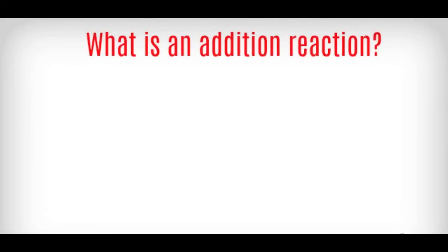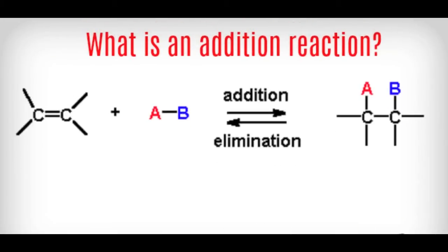What is an addition reaction? Addition reactions are where you're adding something to the molecule to remove the pi bond. The opposite of that is elimination reactions, where you remove something from the molecule to reform the pi bond.